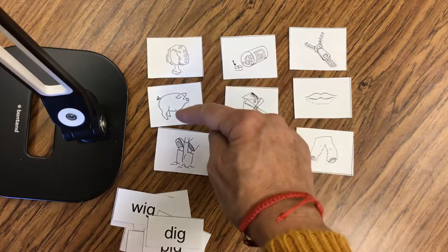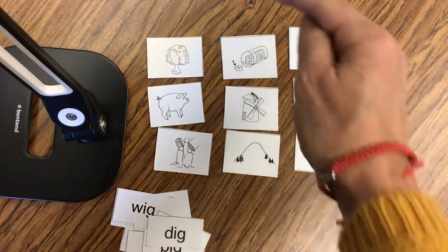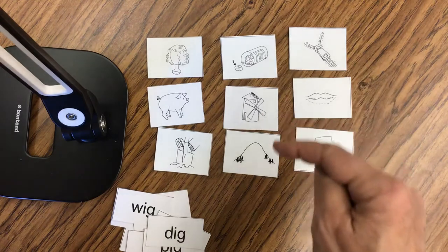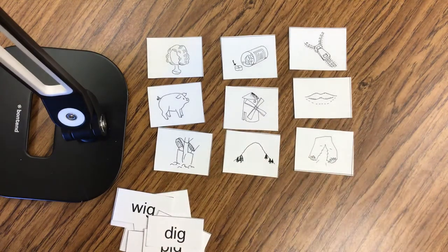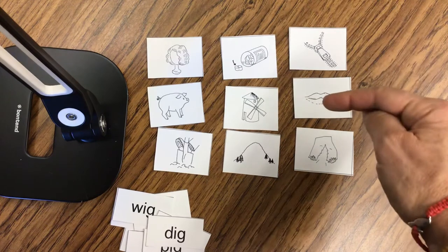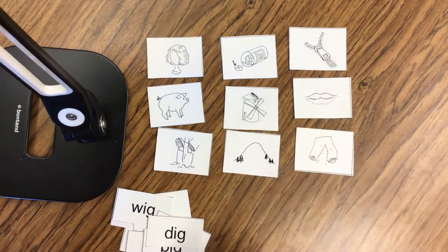So we have wig, pig, dig. We check that. That rhymes. Pill, mill, hill. That rhymes. Zip, lip, rip. That rhymes.